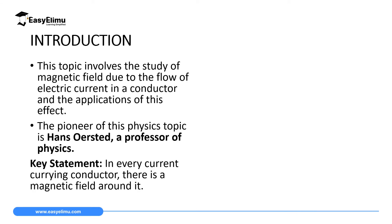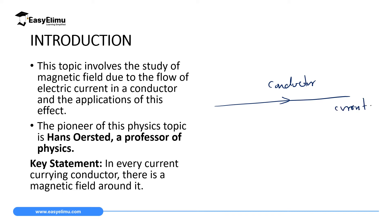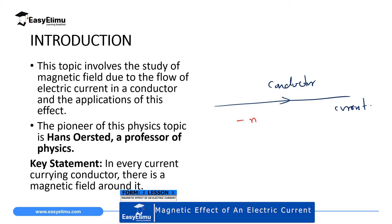So entirely in this topic, we are going to study the magnetic field which is produced due to the flow of an electric current. Then later, we are going to discuss some of the applications of this effect. What you need to know is that whenever you have a conductor which is carrying current in that direction, around this conductor, there is always a magnetic field around it.